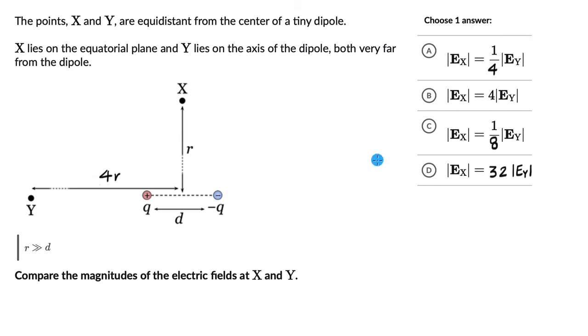Let's recall the electric field due to a dipole on the equatorial plane and on its axis. Point X is on the equatorial plane and point Y is on the axis.